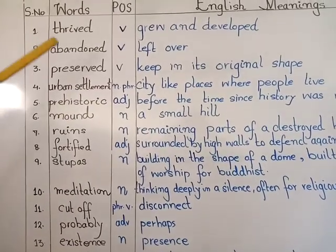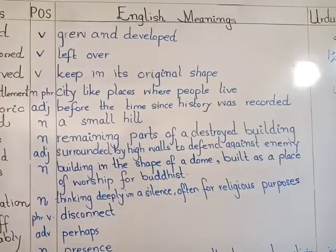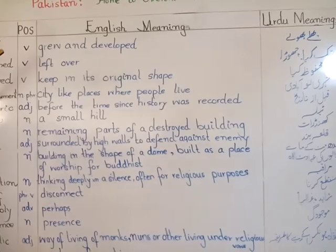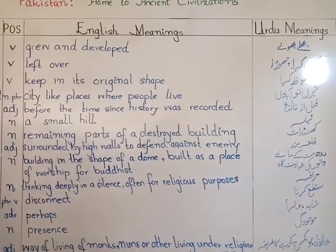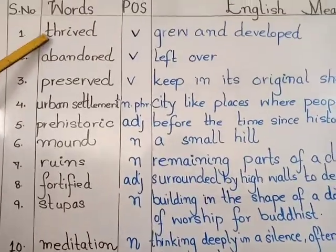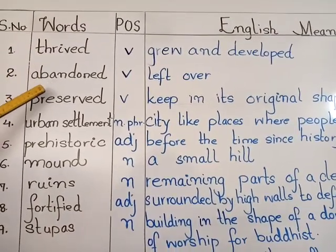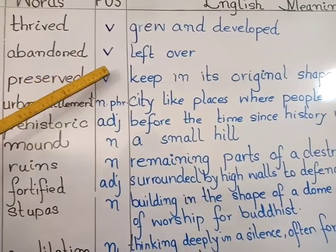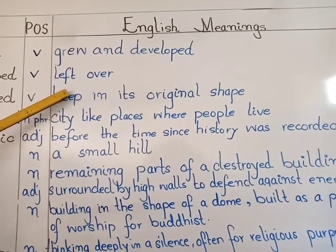The first word is 'thrived'. It's a verb meaning grew and developed — phala phoolna. Because it is in the past tense, the meaning stays in the past sense. The second word is 'abandoned', also a verb, meaning left or given up — tark kiya, chhoda.